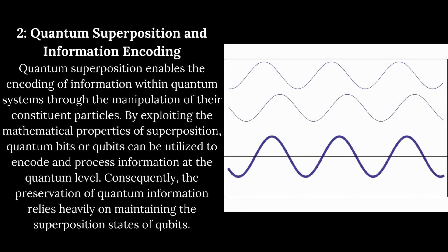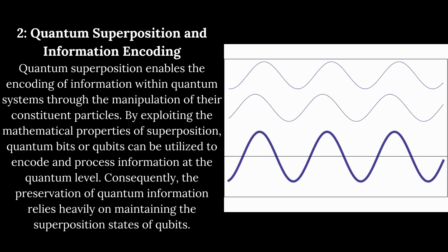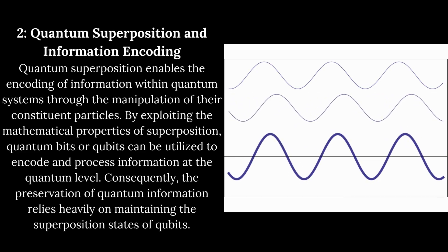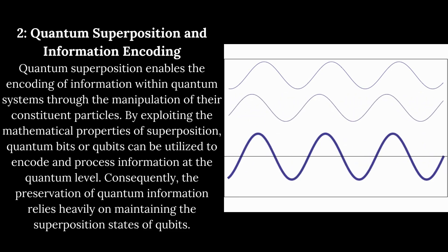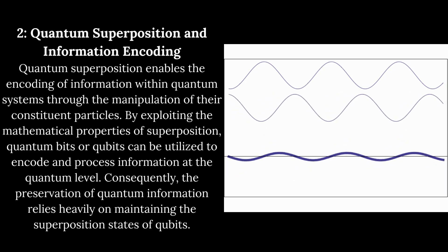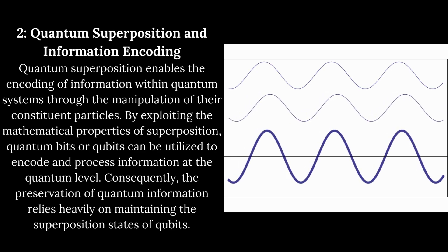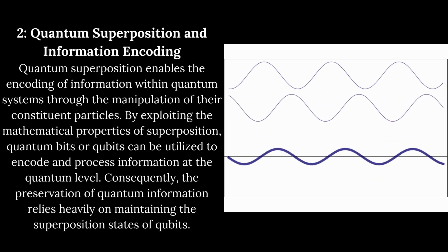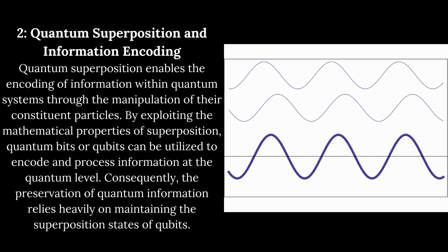Quantum Superposition and Information Encoding. Quantum superposition enables the encoding of information within quantum systems through the manipulation of their constituent particles. By exploiting the mathematical properties of superposition, quantum bits or qubits can be utilized to encode and process information at the quantum level. Consequently, the preservation of quantum information relies heavily on maintaining the superposition states of qubits.